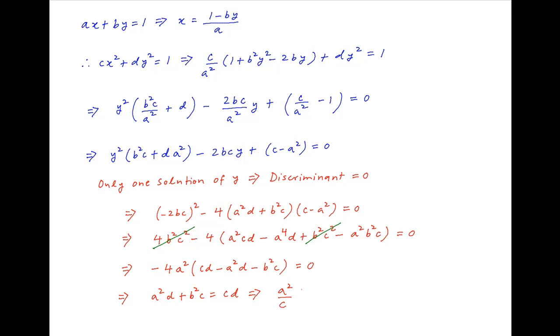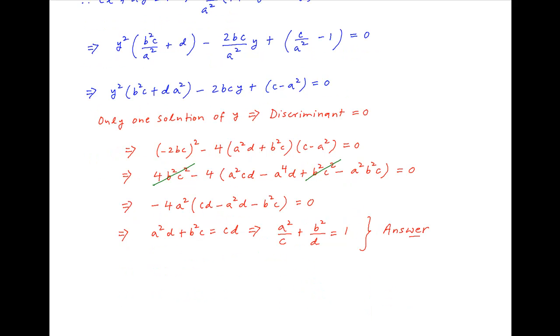Dividing both sides by cd, we get a squared upon c plus b squared upon d is equal to 1. And this is the required result for the given set of equations to have only one solution.